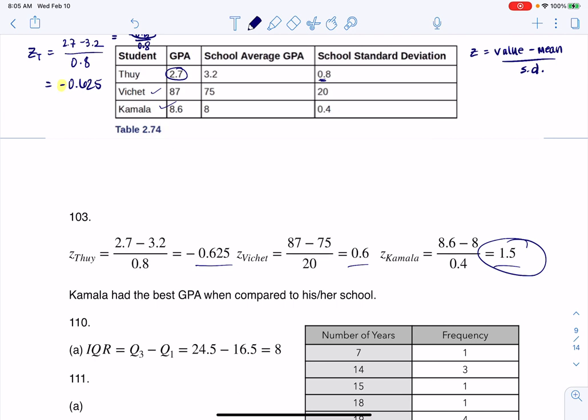And then if we look at it, because Kamala had the highest Z-score, all right, she was one and a half standard deviations above the mean. And actually, we'll give Vichay some credit too, they were above the mean as well. But in the context of this question, Kamala wins.